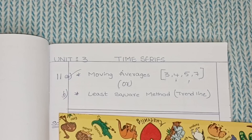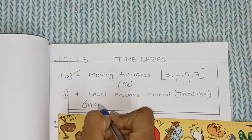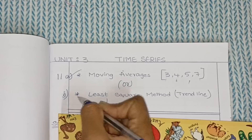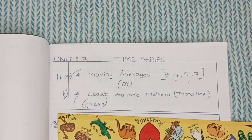Next you will have the least square method or trend line, which is basically a graph representation. How you will need to do the graph representation, everything we will discuss in the video today. Now we will discuss the moving averages — third, fourth, fifth, and seventh.